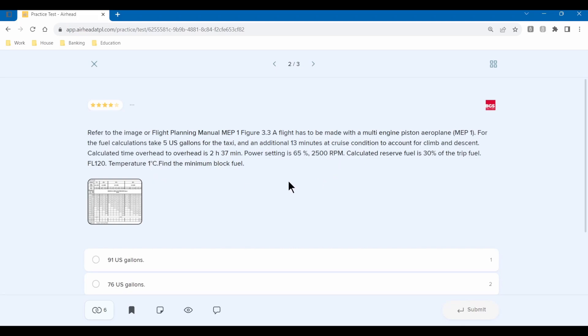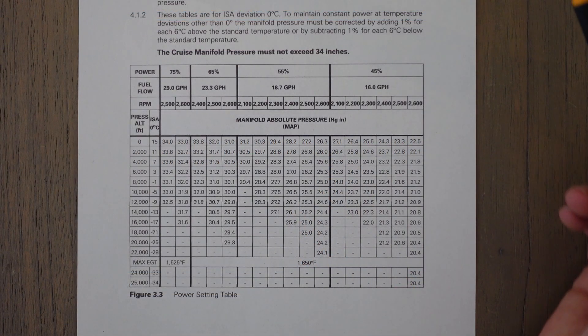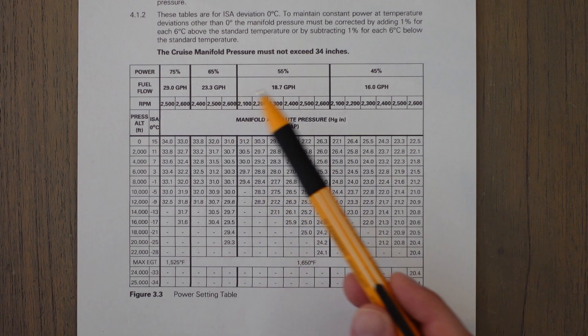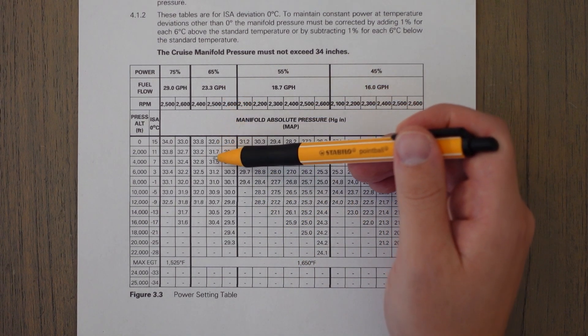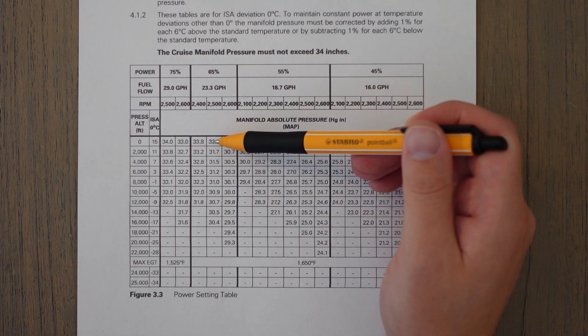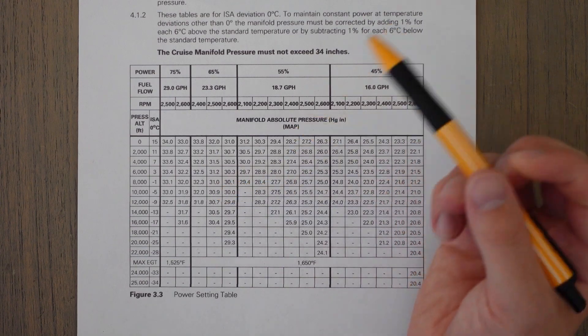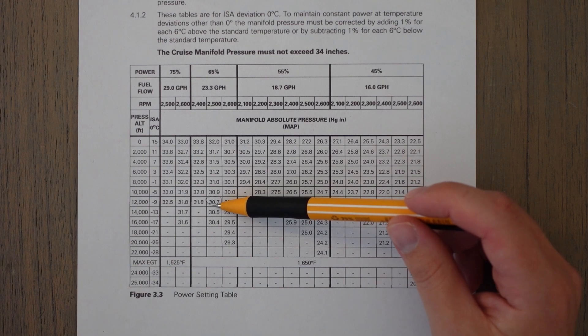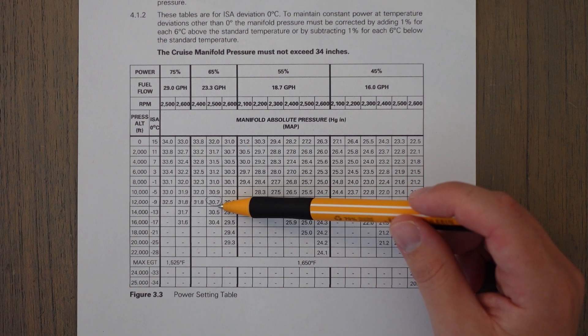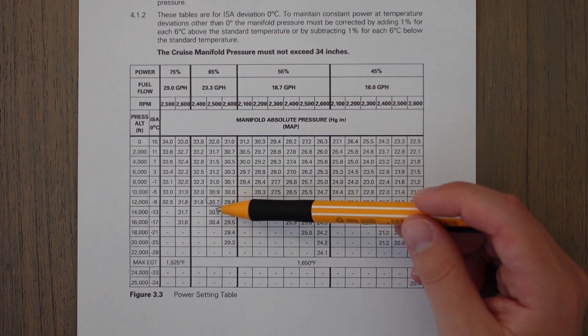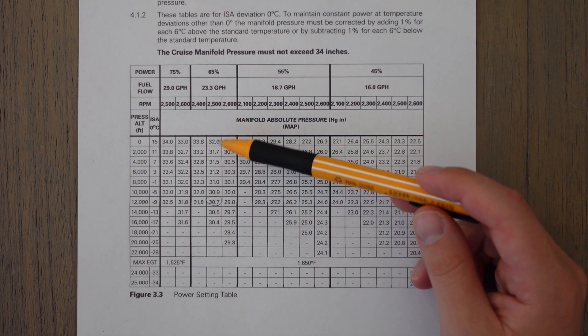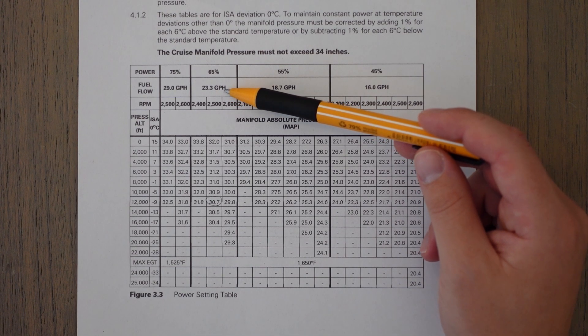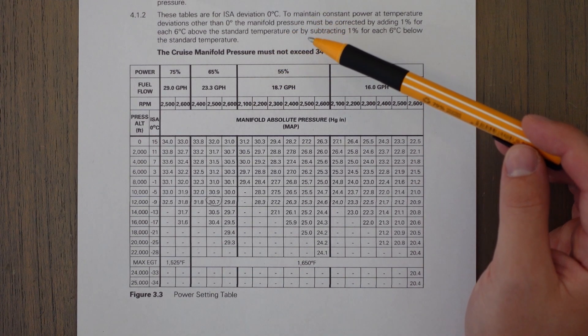The trip fuel is calculated at 1 degree and 65% with 2,500 RPM set. That means we are looking at 65% power, 2,500 RPM—this line here—and we're going to be looking at this column. Then at a flight level of 120, we're looking at this figure here: 30.7. But that's almost a bit of a misdirection because that is our manifold pressure. At the top though, we can see our fuel flow, which is 23.3 gallons per hour.